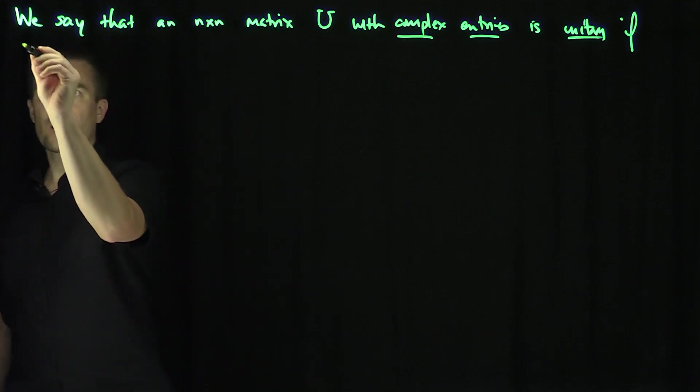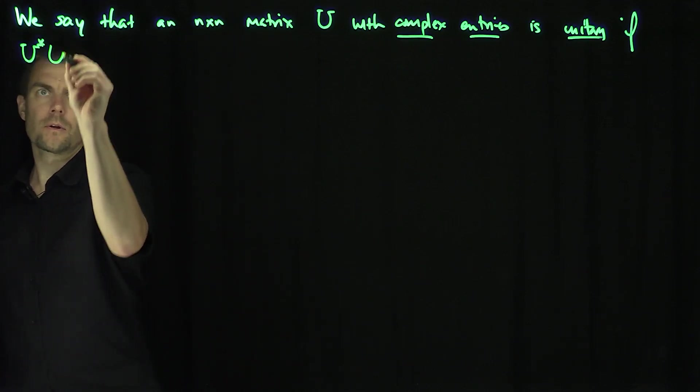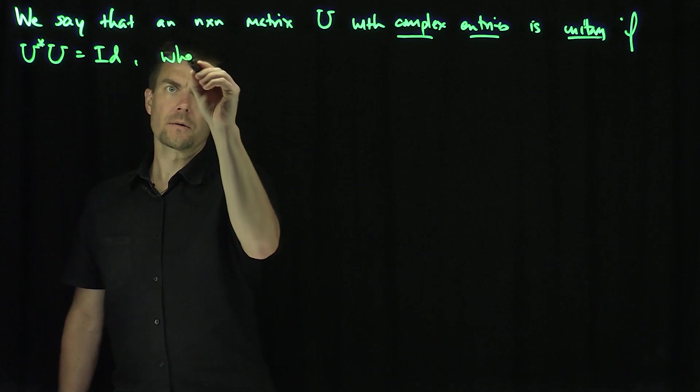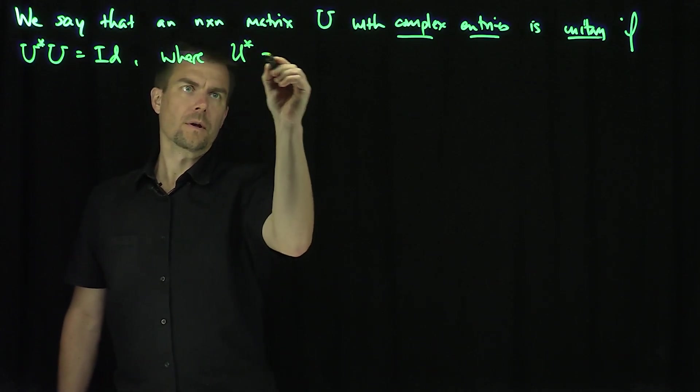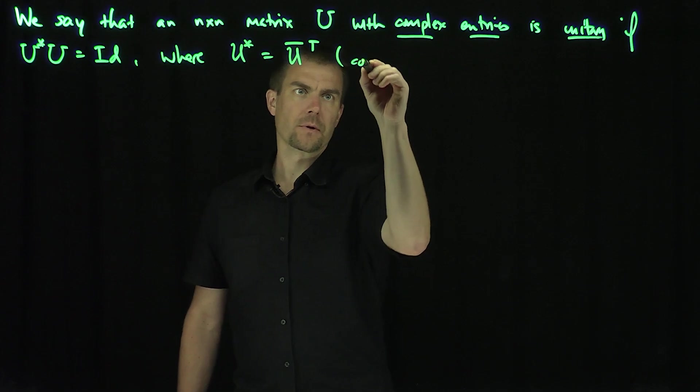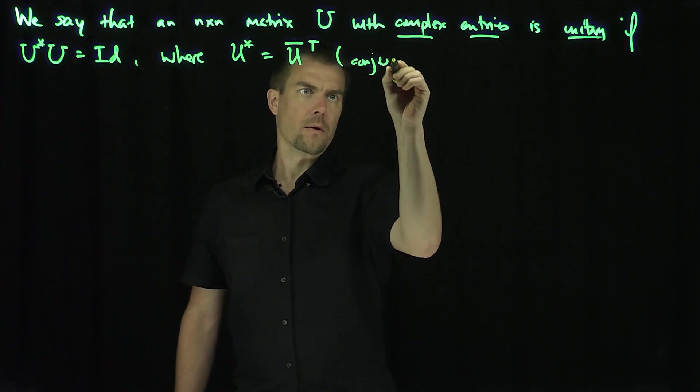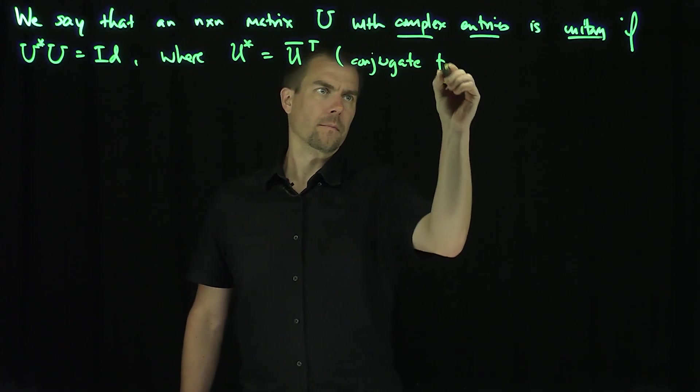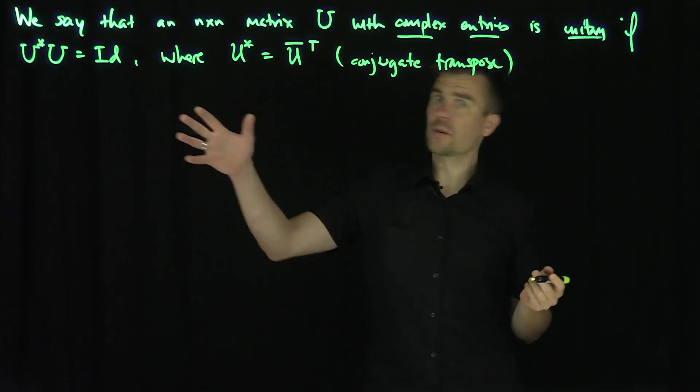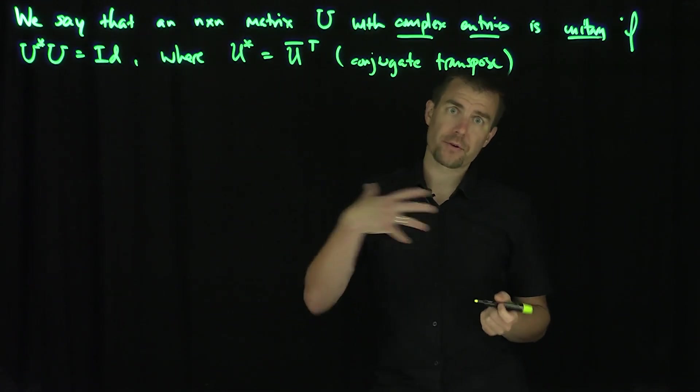if U star, its adjoint, U is the identity. Where U star is U complex conjugate transpose, the conjugate transpose. In other words, the conjugate transpose of the matrix is its inverse.